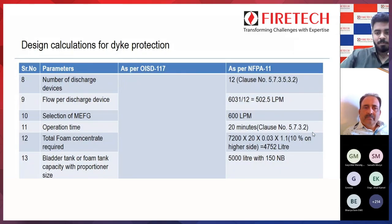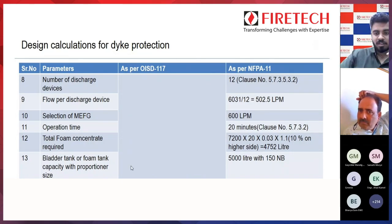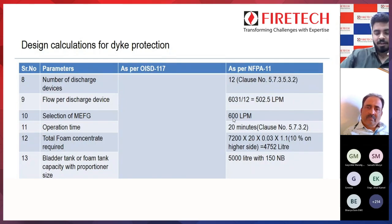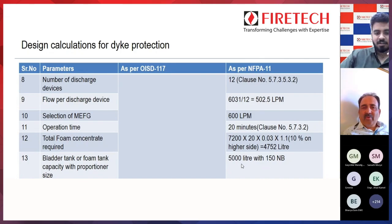Total foam concentrate required for the dike area: 12 MEFGs × 600 lpm = 7200 lpm total, multiplied by operation time of 20 minutes × 0.03 (3% foam) × 1.1 (10% safety) = 4752 litres. Bladder tank capacity based on manufacturer standards comes to 5000 litres. The proportioner size from the manufacturer data sheet is 150 NB for two units, which covers the 7200 lpm total flow requirement.